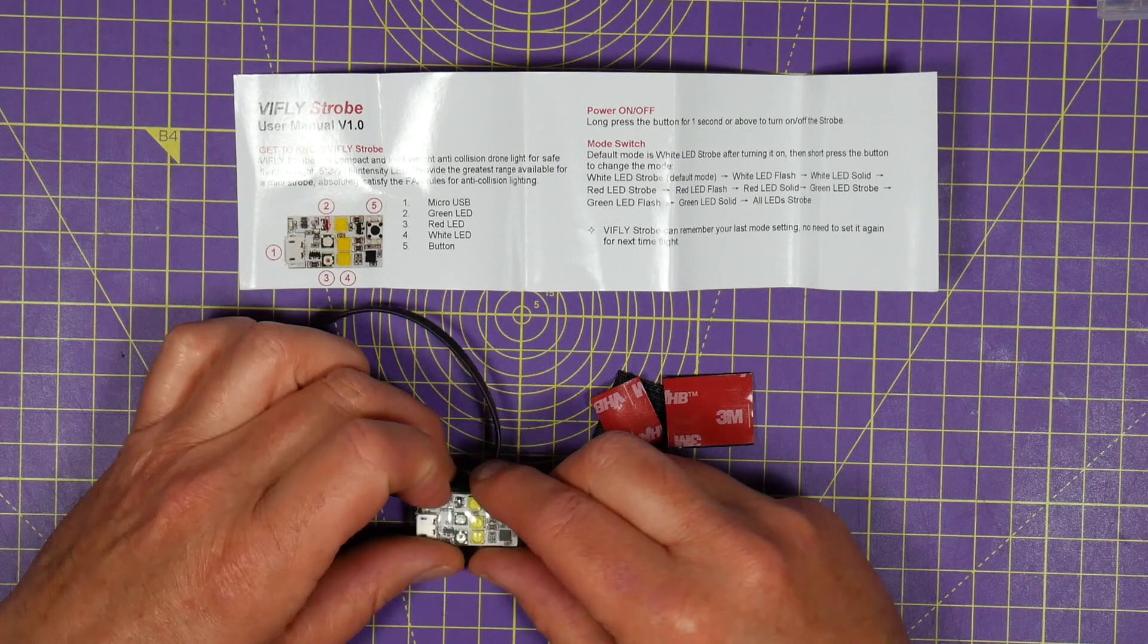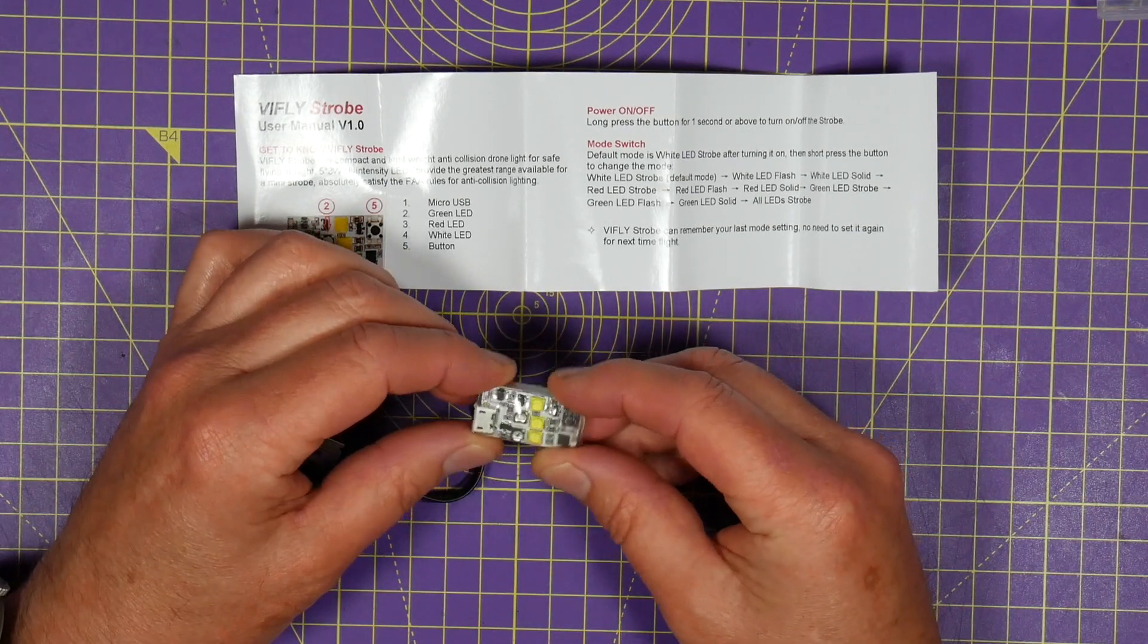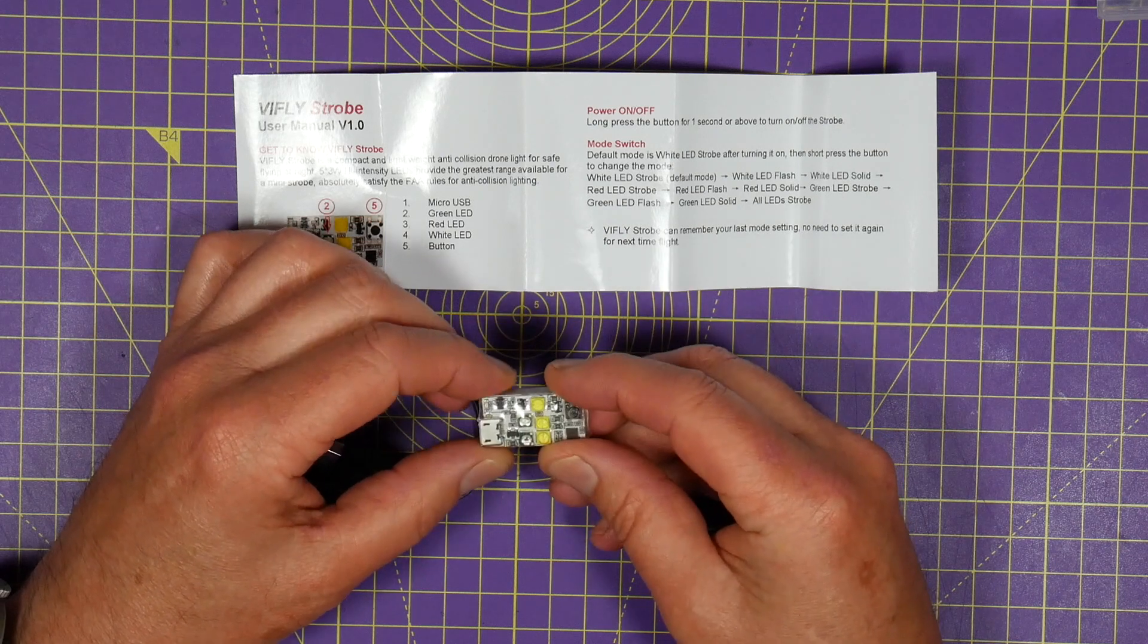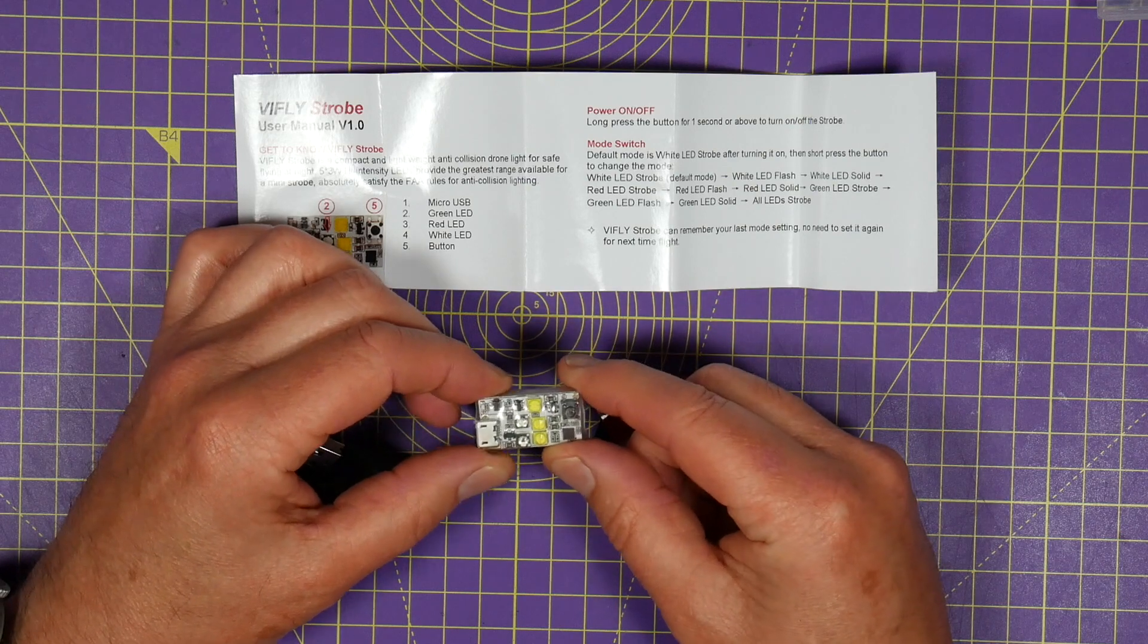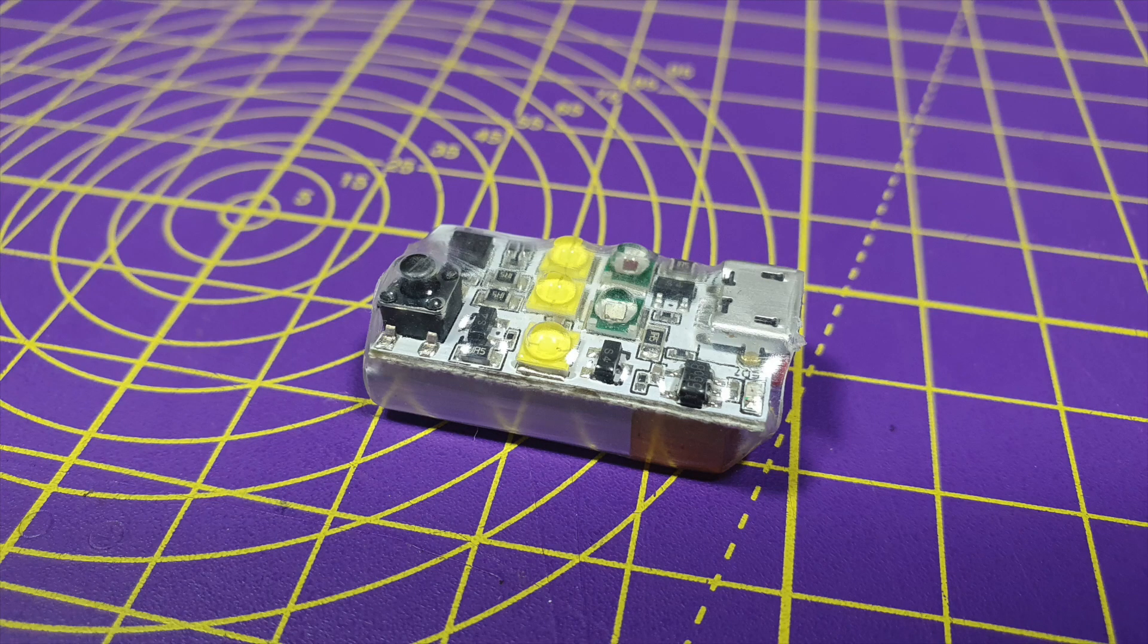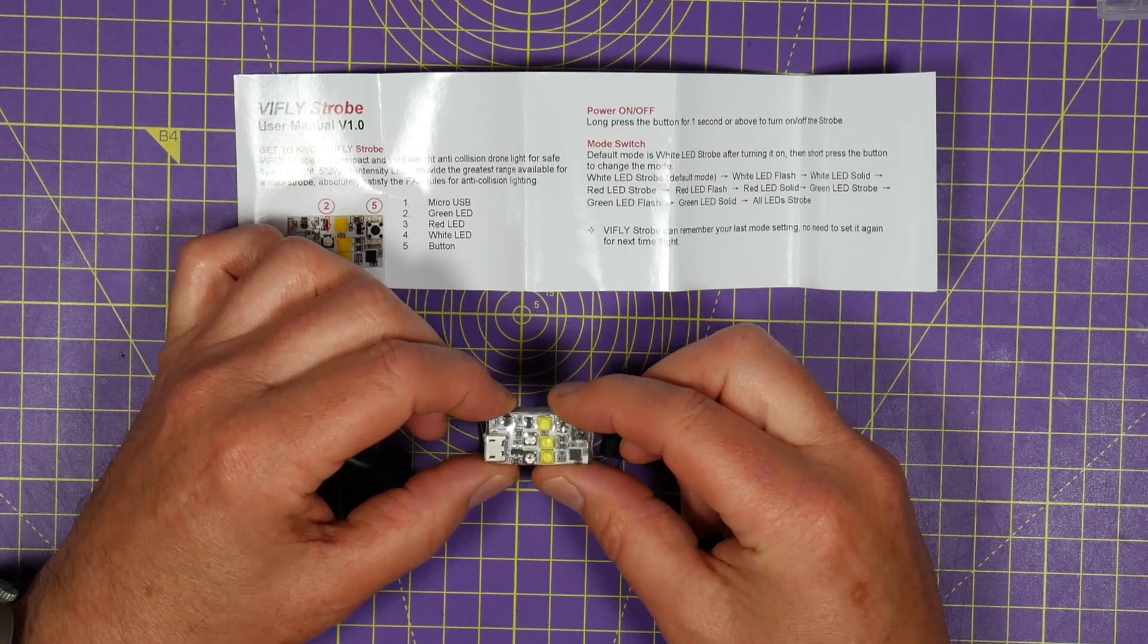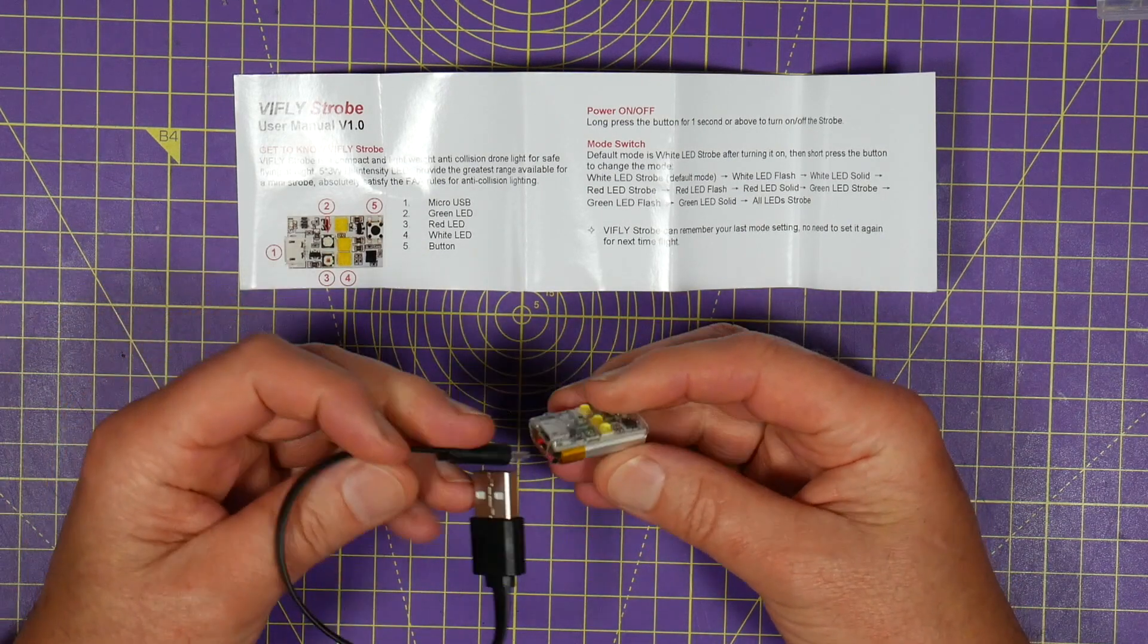This uses five 3 watt high intensity LEDs that give you the option of white, green or red with different flash modes all in this one small package. And this only weighs six grams and it includes a 160 mAh battery to keep the LEDs working for up to four hours. You just use this included USB lead to charge it up. It takes about an hour.